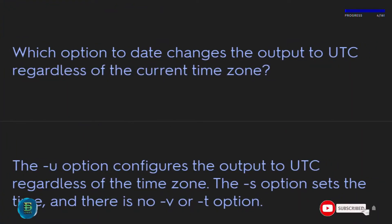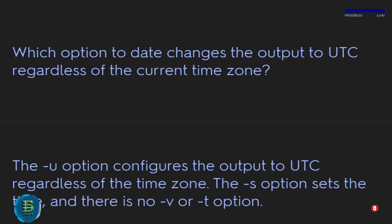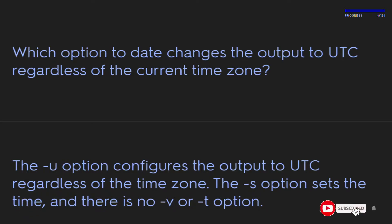Which option to the date command changes the output to UTC regardless of the current timezone? The U option configures the output to UTC regardless of the timezone. The S option sets the time, and there is no V or T option.